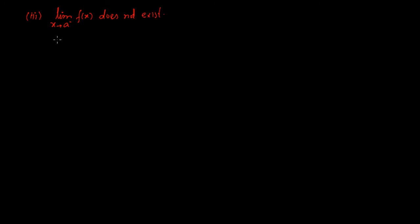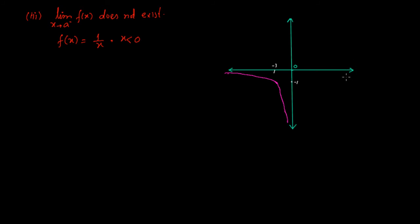In order to understand it, let me take an example: f(x) = 1/x where x is less than zero. If we look at the graph of this function — here is the x-axis, here is the y-axis — since x values are all negative, we take x = -1, -2, and so on. When we take x = -1, f(x) = 1/(-1) = -1, so the point (-1, -1) is on the graph.